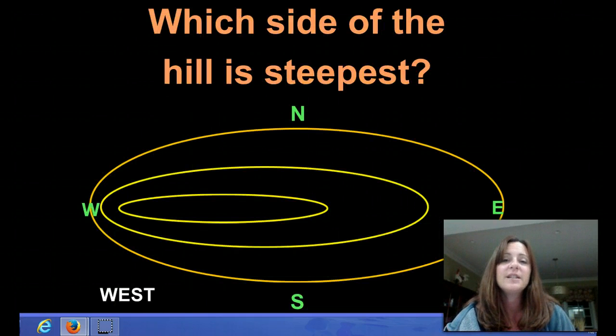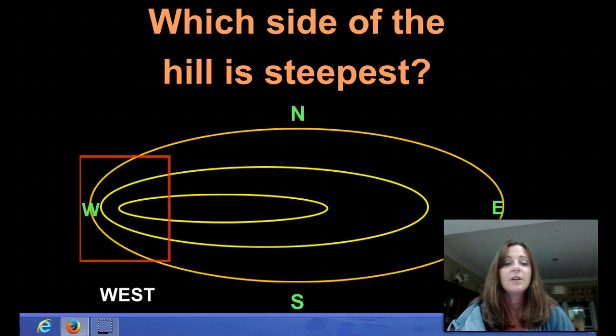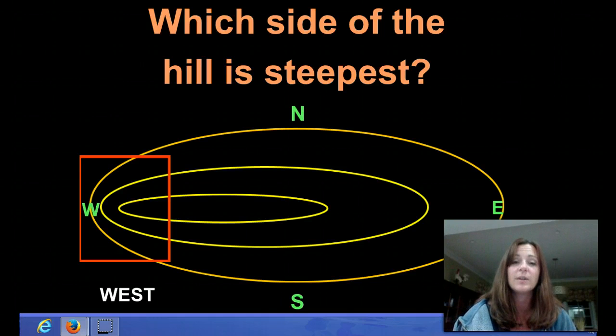So which side of the hill is the steepest on this slope, on this hill? West. The area is west, is close together, and so it's steep.